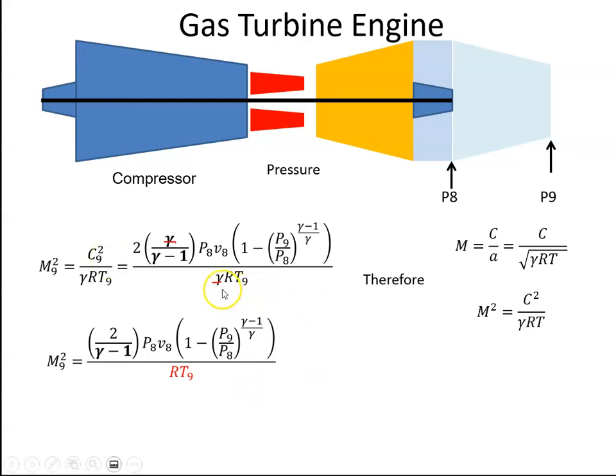We get RT9 and we know that RT9 is equal to P9 V9. Again, that's from the universal gas law so we can substitute that back in.